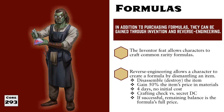Although the book does not state that only common rarity items can be reverse engineered, crafting a formula like this is based on the formula's price. And at the time of this recording, formula prices are only available for common rarity items. But if the GM wishes to place a price on the formula for an uncommon or rare item, then this process theoretically could be used by players to gain harder to find formulas.